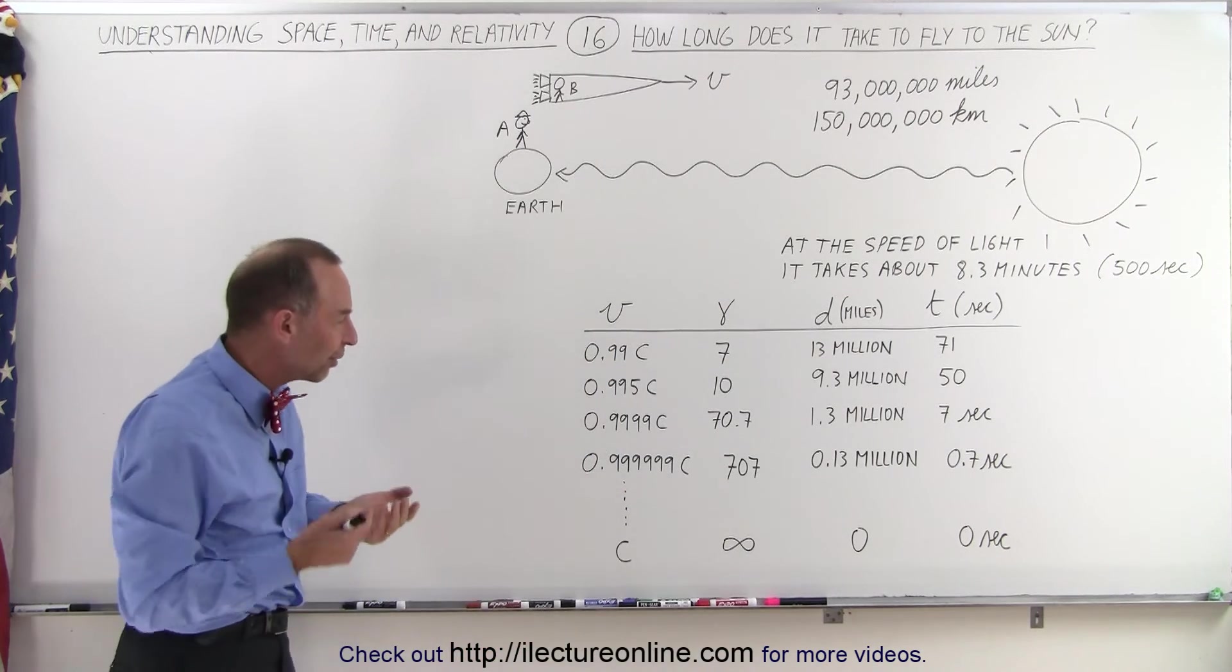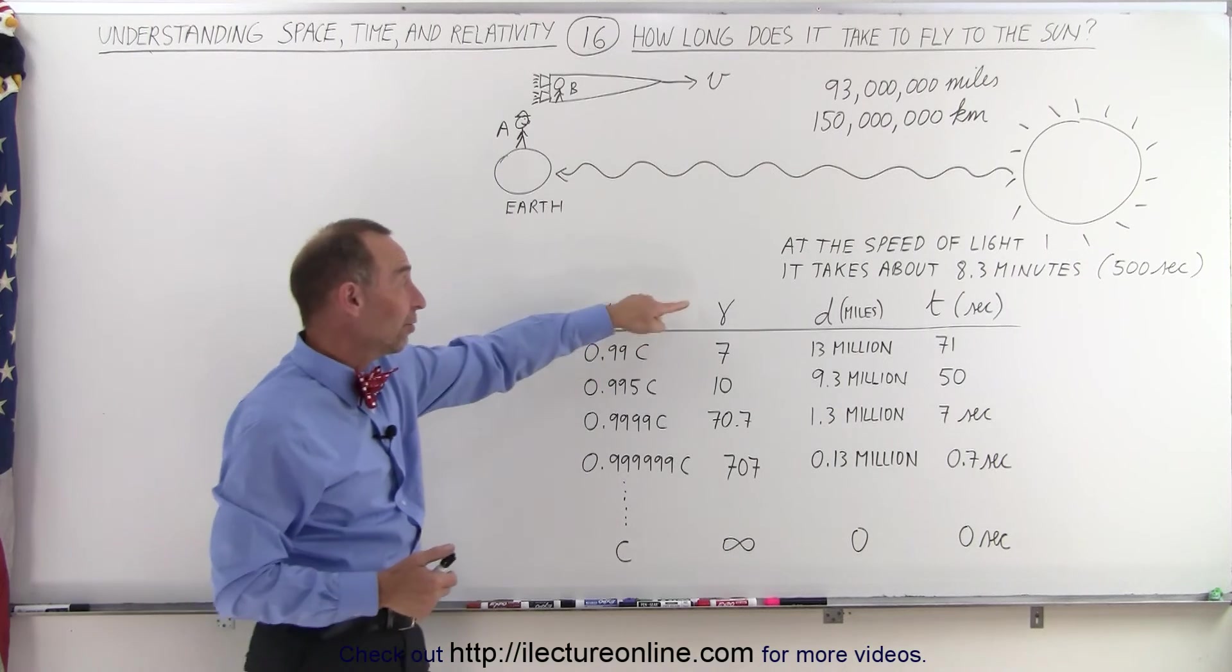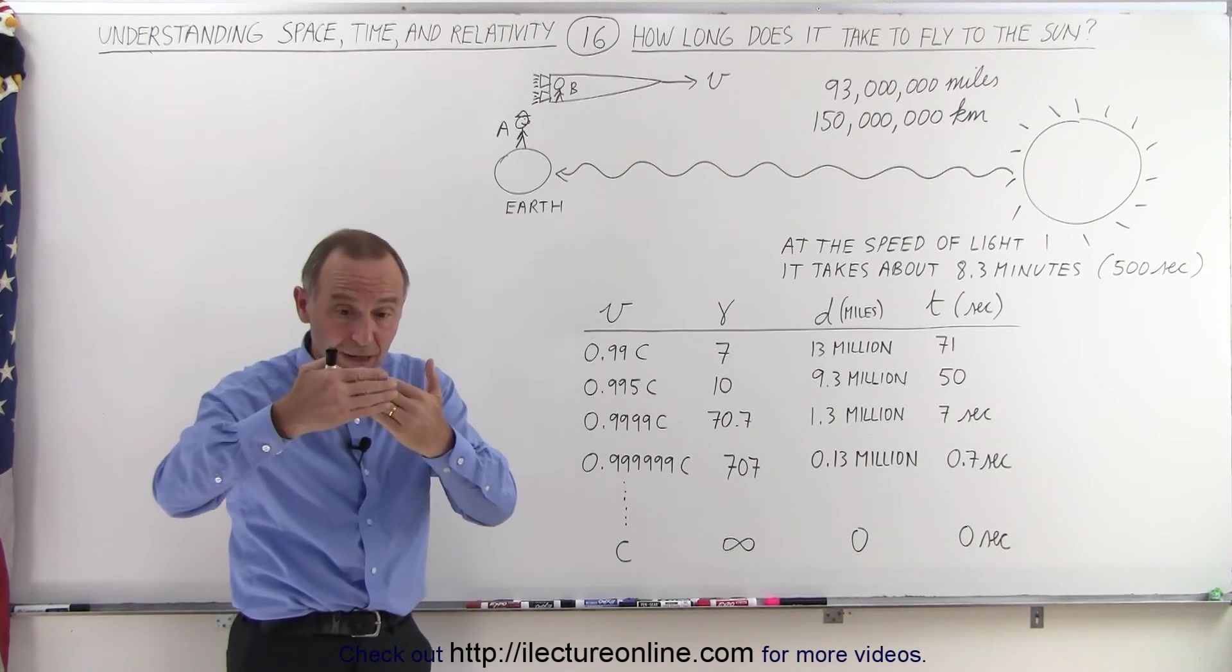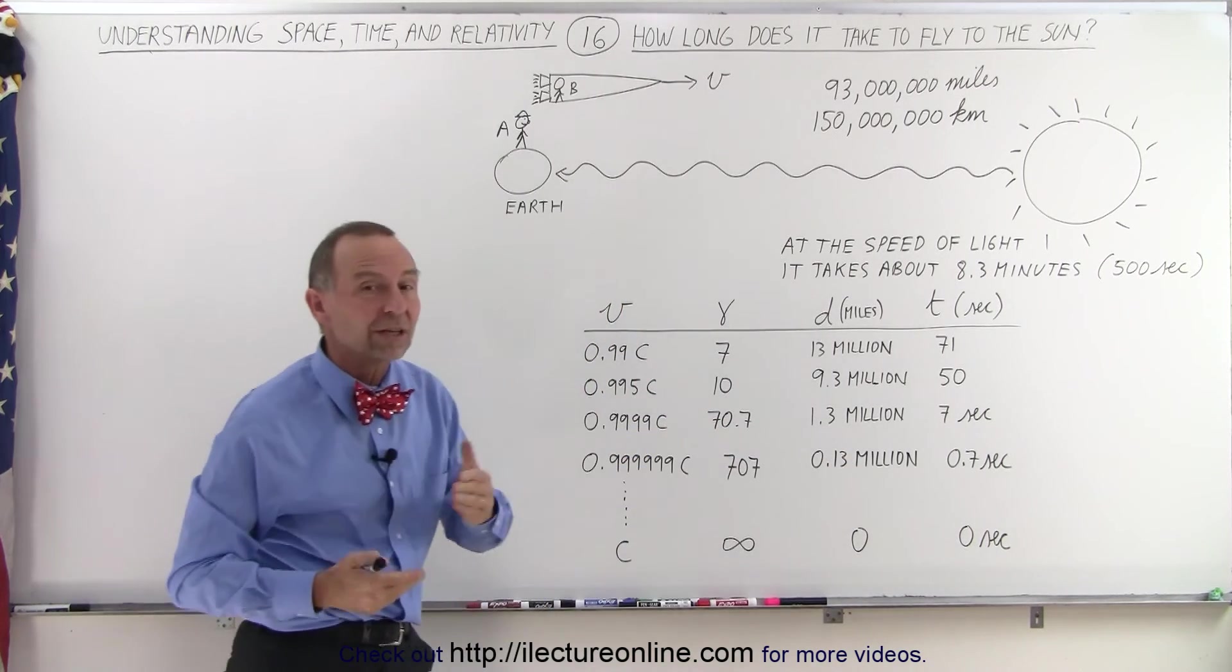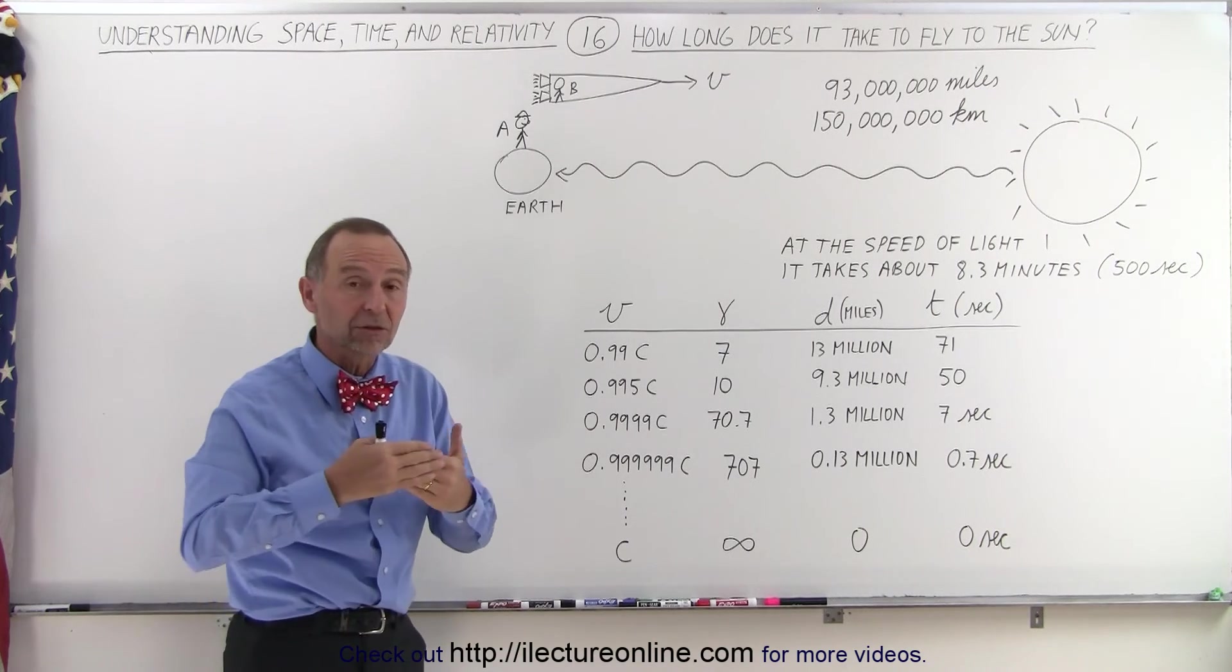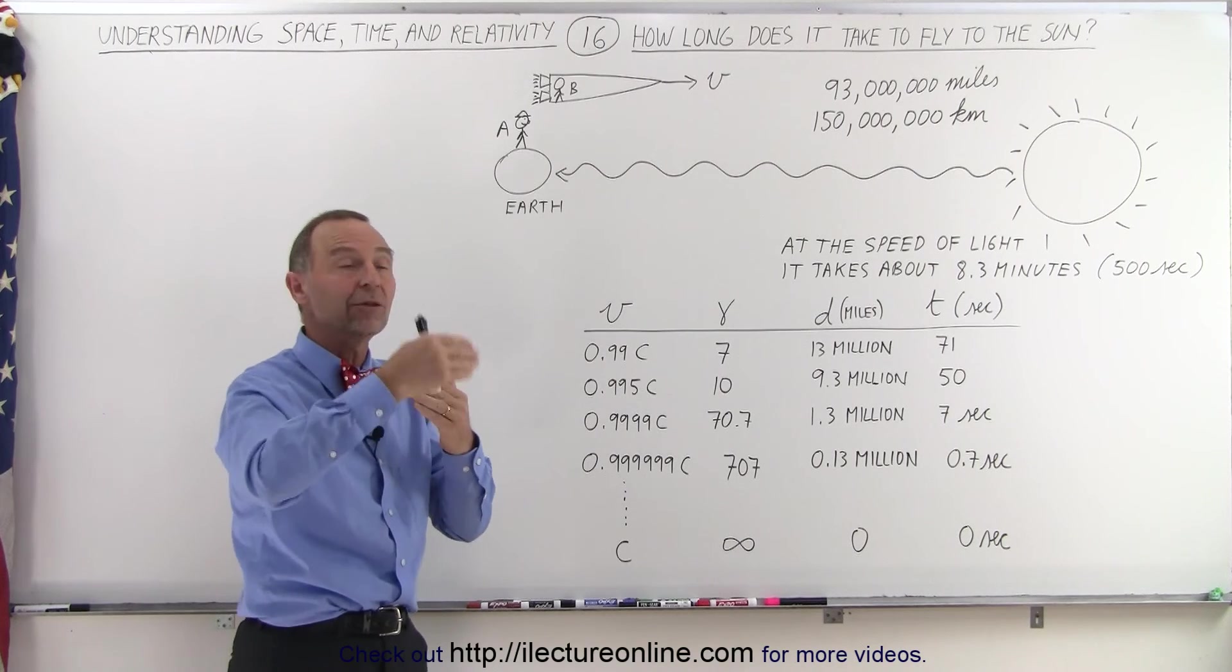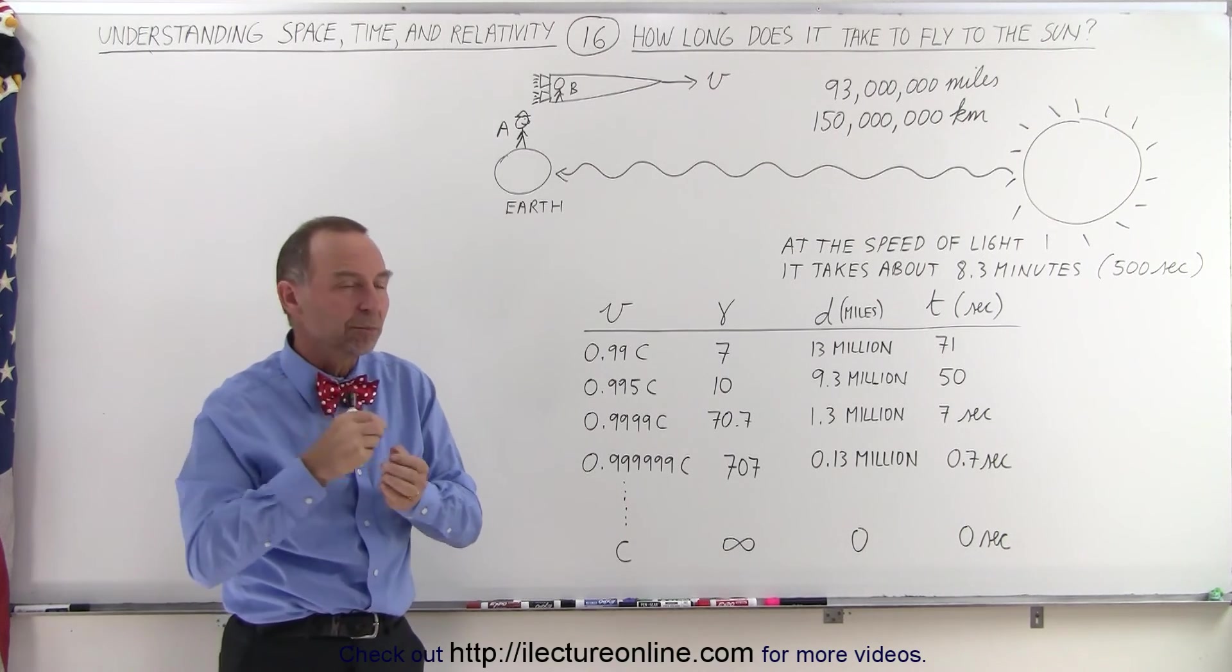Now, what would happen if you could actually speed up all the way to the speed of light? Well, then the Lorentz factor would become infinity. The distance to the Sun would appear to shrink down to zero, and therefore the time it would take you to get to the Sun would be zero seconds. Time would simply stop moving forward, and distance would shrink down to zero. The entire universe would only have zero size from one end to the other end of the universe, if you were to move through the universe at the speed of light.